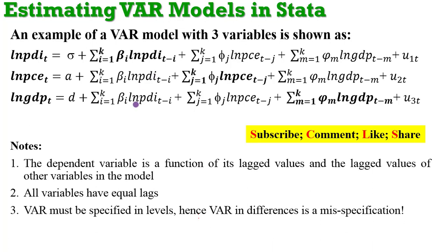The dependent variable is just a function of its own lagged values and the lagged values of other variables in the model. Another important feature of a VAR model is that all the variables have equal lags — you can see k lags across all the variables. The same number of lags is used to estimate the model, not individual lags for each variable as is often the case in an ARDL model.